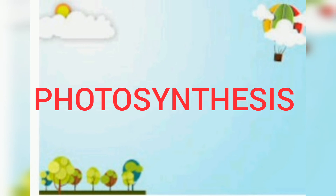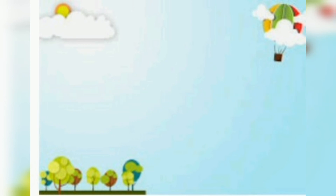During photosynthesis, plants transform light energy into chemical energy that is stored as starch. Light energy that comes from the sun transforms to chemical energy that is stored as starch.